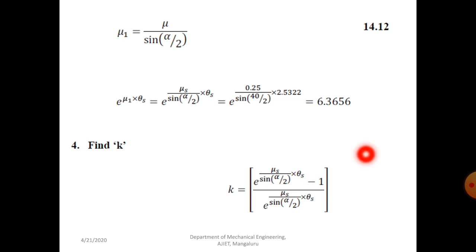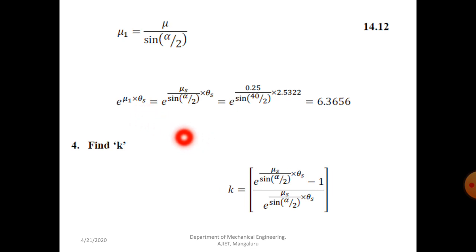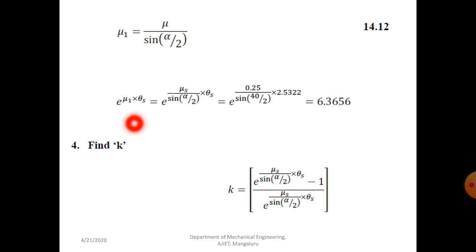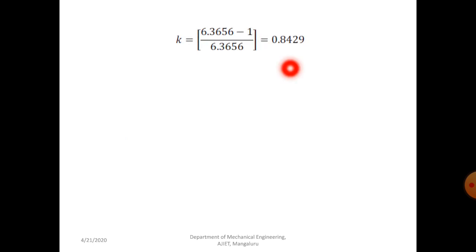Next, find the value of k. In flat belt design you calculate (e^(mu*theta_s) − 1) / e^(mu*theta_s), but here we use apparent coefficient: k = (e^(mu1*theta_s) − 1) / e^(mu1*theta_s). Substituting 6.3656: k = (6.3656 − 1) / 6.3656 = 0.8429.